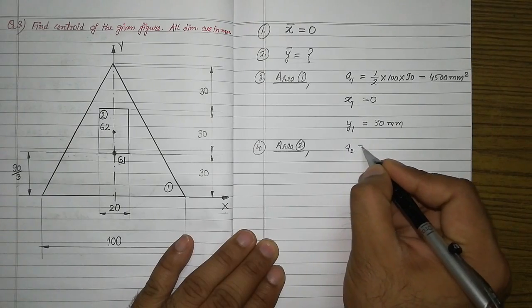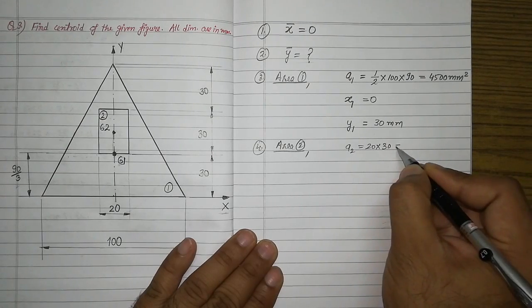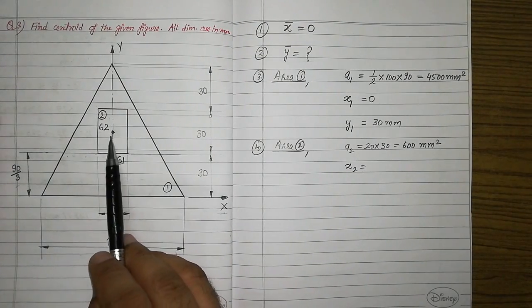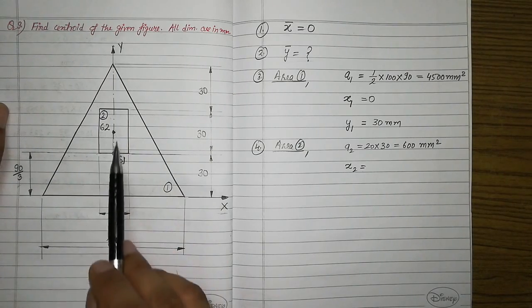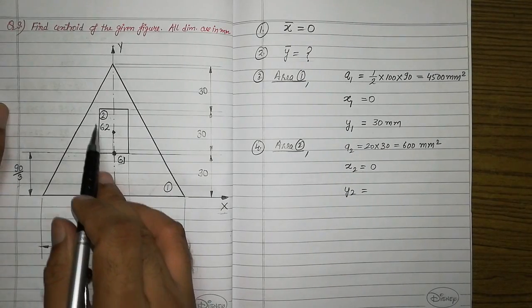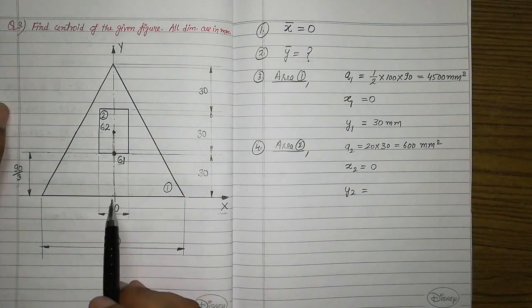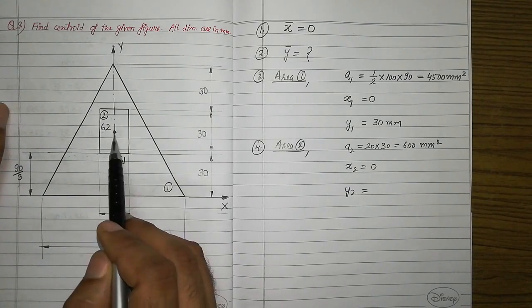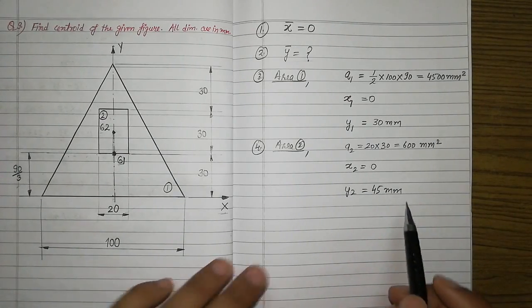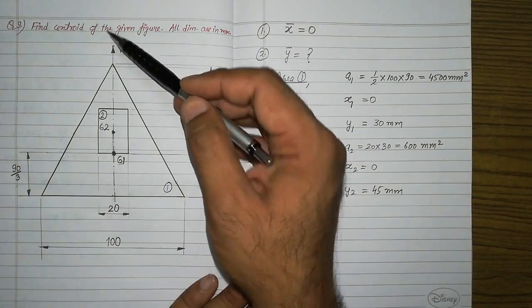For area two, the rectangular area: A2 = length × width = 20 × 30 = 600 mm². x2 is the distance of centroid G2 from the y-axis — it is already on the y-axis, so x2 = 0. y2 is the distance of centroid G2 from the x-axis. This distance is 30 (the gap below) plus 15 (half of 30), which is 45 mm. There is no need to calculate x-bar because the whole figure has one axis of symmetry, so x-bar = 0.